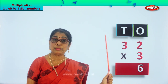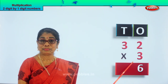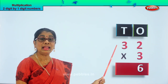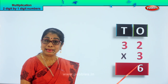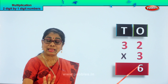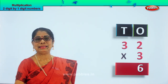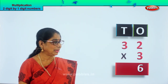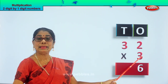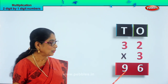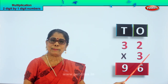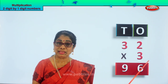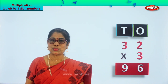Let's go to the tens place and we have three here. Three into three — three threes. Three ones are three, three twos are six, three threes are nine. By repeated addition: three plus three is six, six plus three is nine. So you get three threes are nine — we write nine here. Thirty-two multiplied by three gives you the answer ninety-six — nine tens, six ones.